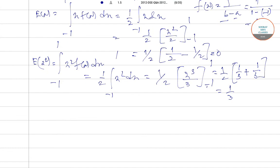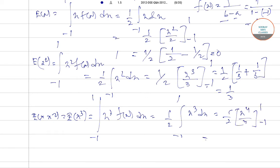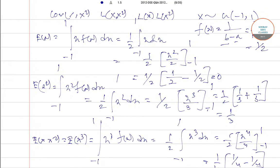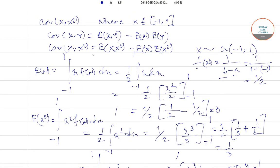Again for expectation of X³, using the written formula, this works out to 1/4 minus 1/4 equals zero. Therefore, coming back to our first formula, it is zero minus zero times 1/3, which equals zero.